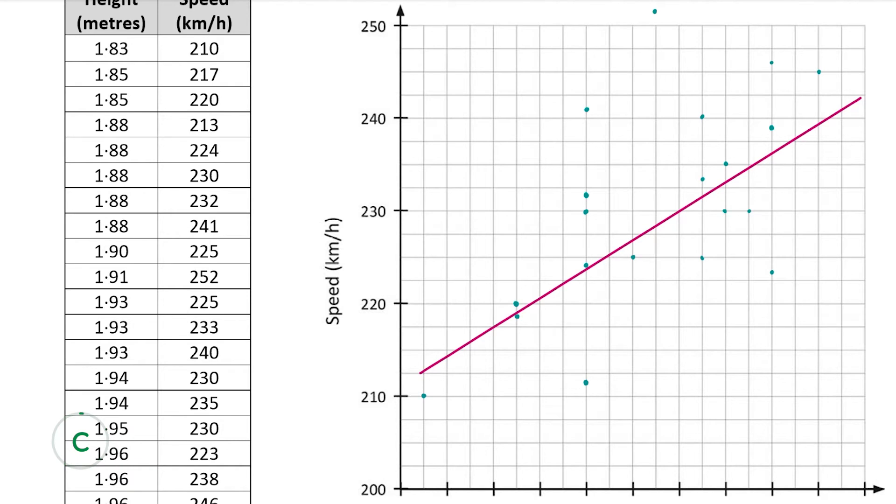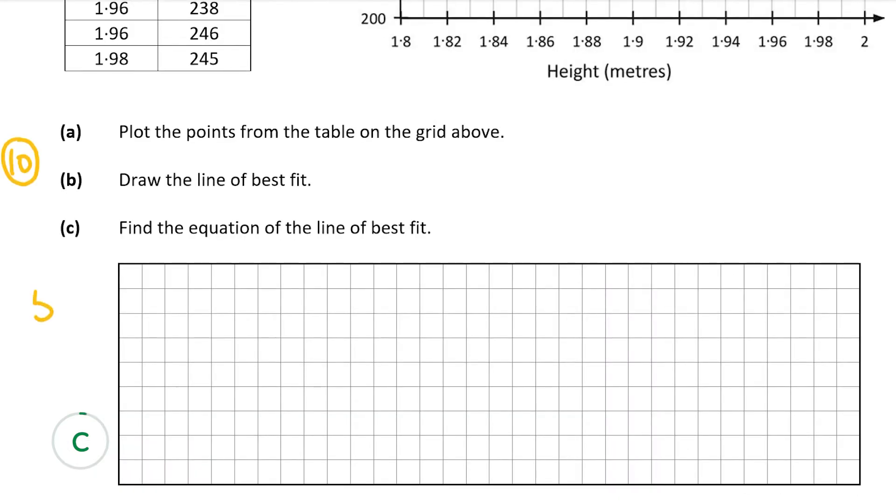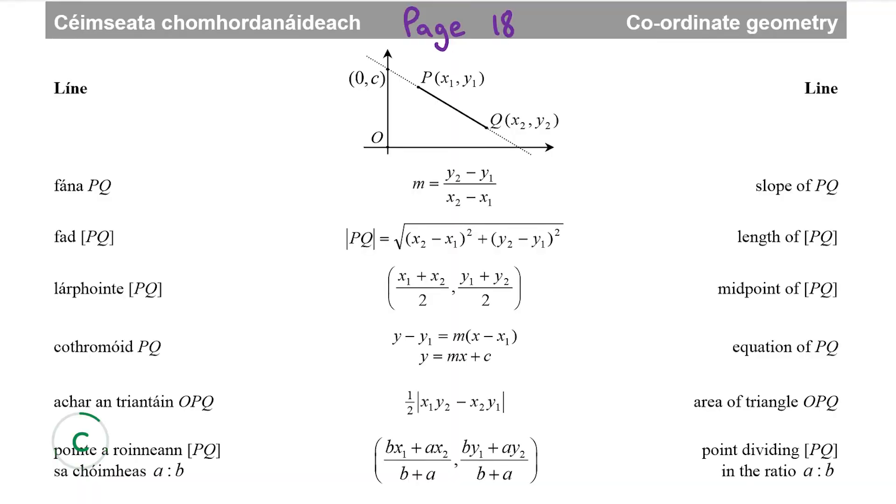So let's have a look at part C of the question and part C is worth five marks. Part C wants us to find the equation of the line of best fit. So let's go to our formula tables book on page 18 and look up the formula for the equation of a line. The formula for the equation of a line is y minus y1 equals m times x minus x1, with m being the slope and x1, y1 being a coordinate on the line. So let's go back to our graph now and let's see if we can find the slope and then a coordinate on the line. We can say that the slope is equal to rise over run.